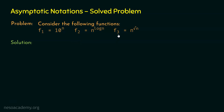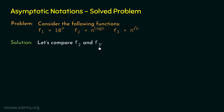Let's compare f2 and f3 first. As we can observe, in these two functions — n to the power log n and n to the power square root of n — the bases are the same but the powers are different. Comparing functions with the same bases is always easy, so let's compare f2 and f3 by comparing their powers.